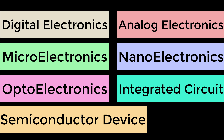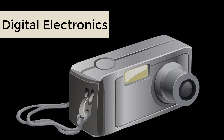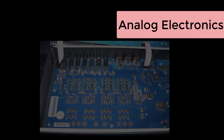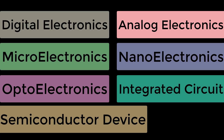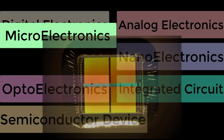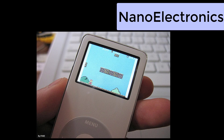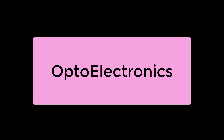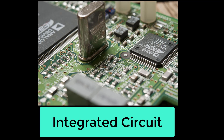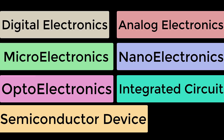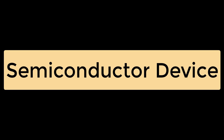Electronics has various branches, including digital electronics, analog electronics, microelectronics, nanoelectronics, optoelectronics, integrated circuits, and semiconductor devices.